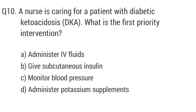Question number ten. A nurse is caring for a patient with diabetic ketoacidosis. What is the first priority intervention? The right answer is option A: administer IV fluids.